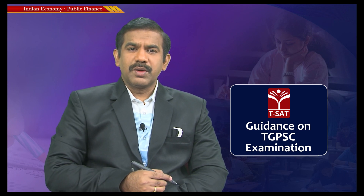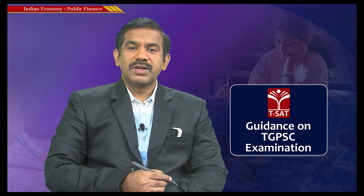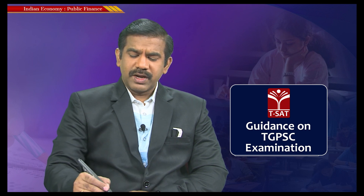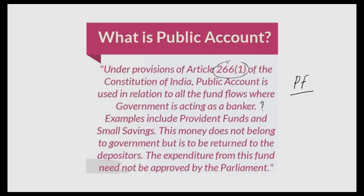The third and most important account is the Public Account. According to Article 266, the public account is used in relation to all fund flows where the government is acting as a banker. For example, post office small savings schemes and provident funds — where government employees save a portion of their income with the government — are held in this account.